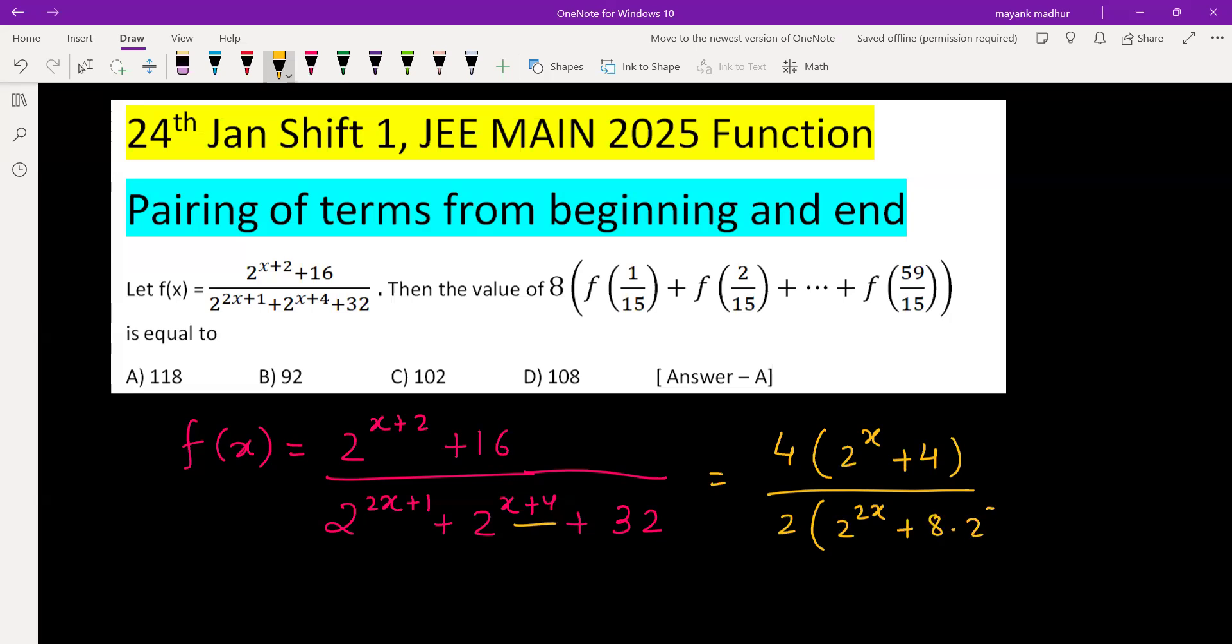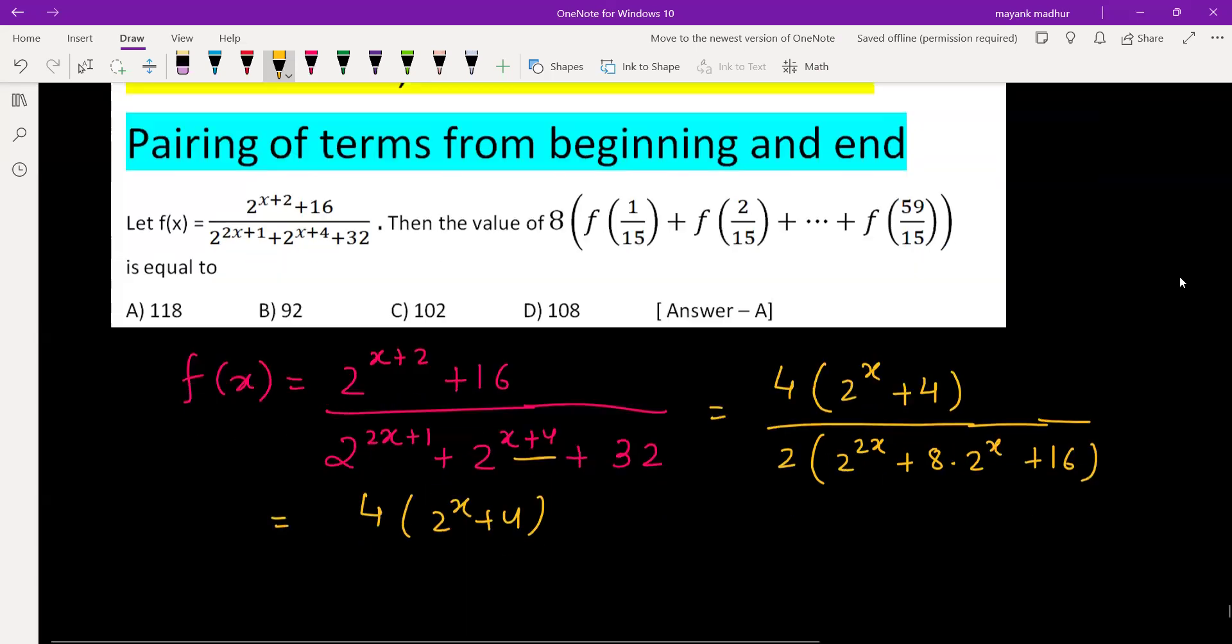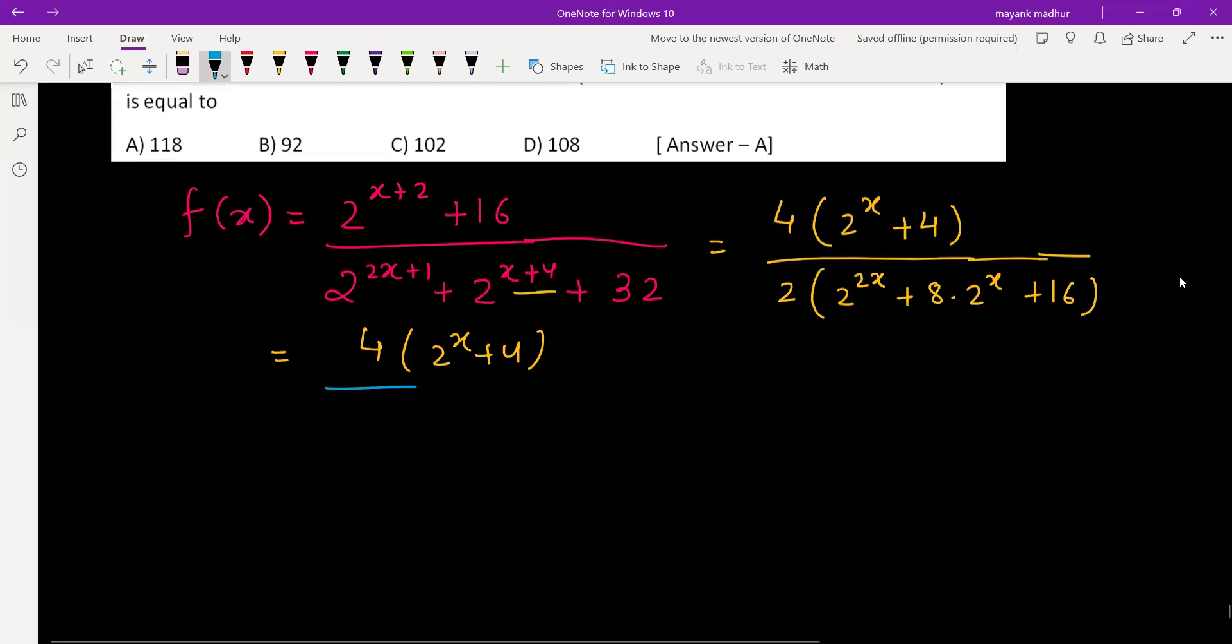We took 2 common, so 8 into 2 raised to x plus 16. The denominator is in perfect square form. It has 4 times 2 raised to x plus 4 in the numerator, and denominator is in the form of 2 times a square plus b square plus 2ab.